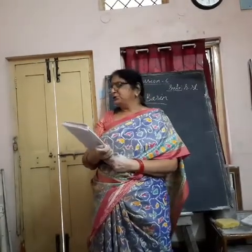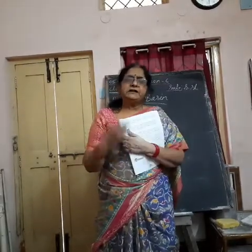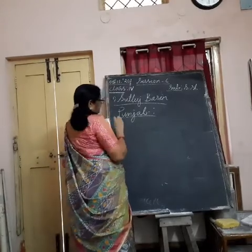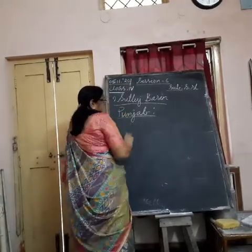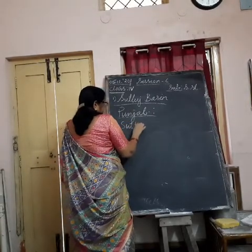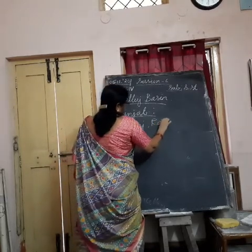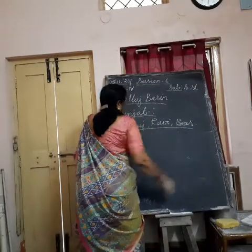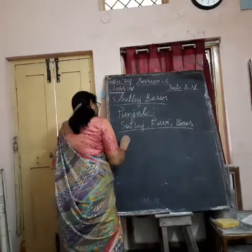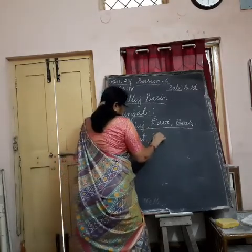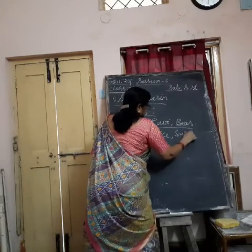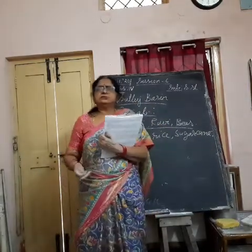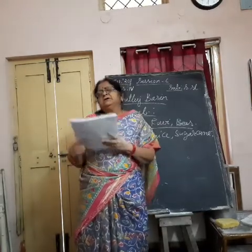Wheat, rice and sugarcane are the main crops of Punjab. Punjab means the land of five rivers — 'Punj' means five and 'Ab' means rivers. Apart from wheat, rice and sugarcane, vegetables and pulses are also grown here. Cattle rearing is also an important occupation in Punjab.